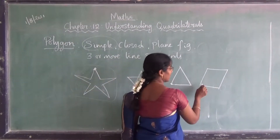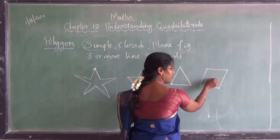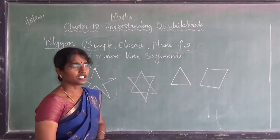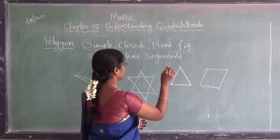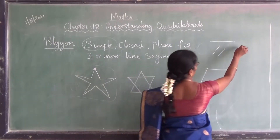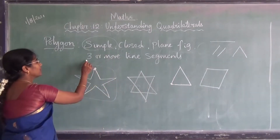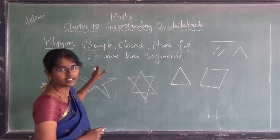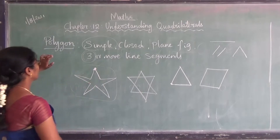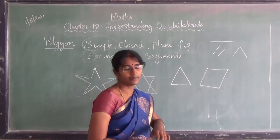Now, this is a simple figure because it doesn't cross any other line segments, and it is a closed and plane figure. I said it has three or more line segments. Is it possible to draw a polygon with two line segments? If I draw only one line it's not closed, and if I draw two lines we can't make a closed figure. So a minimum of three lines must be there. Polygon means a simple, closed, plane figure with a minimum of three or more line segments.